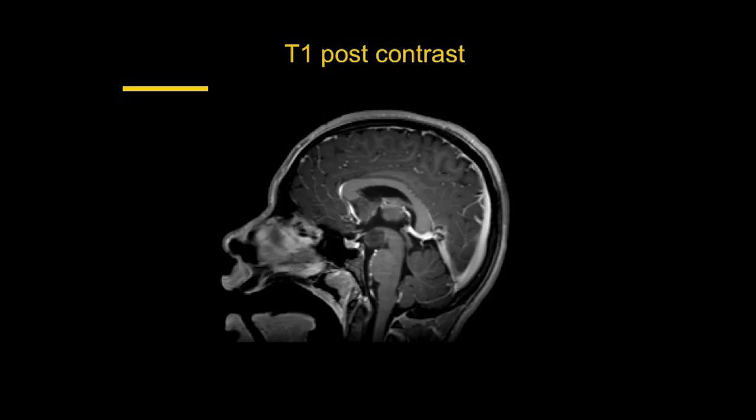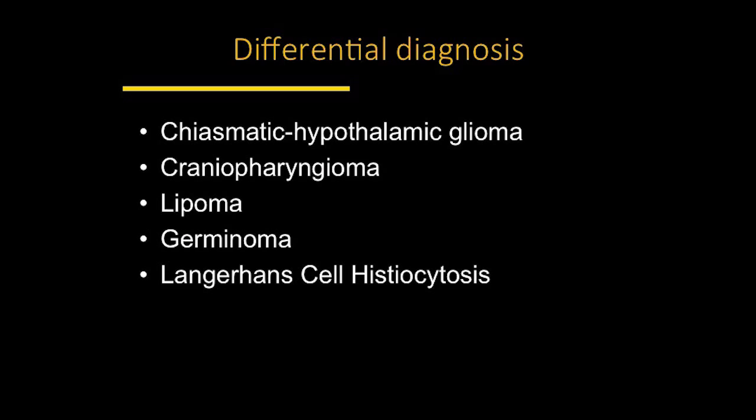On the post-contrast image, we see vessels and venous sinuses that are bright — confirming contrast is present. The pituitary gland enhances and becomes brighter, and the pituitary stalk also enhances. But the hamartoma in the hypothalamus does not enhance — this non-enhancement is the important characteristic that distinguishes it.